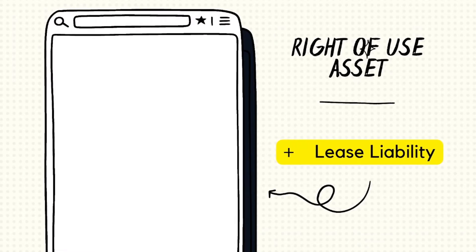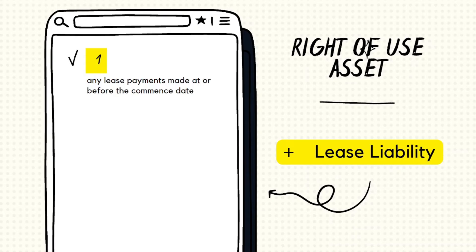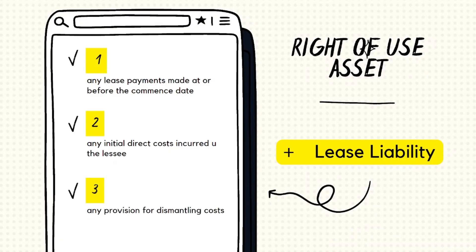By what amount should we debit the right-of-use asset? That's a little more technical, because we may not only be incurring the lease liability — we may have made other expenditures as well. In addition to the lease liability, the value of the right-of-use asset also includes: any lease payments made at or before the commencement date (amounts paid for the asset not captured in the lease liability); any initial direct costs incurred by the lessee; and any provision for dismantling costs. When we recognize a dismantling provision, we debit the asset account rather than an expense, so that the dismantling cost is spread over the useful life of the asset and not expensed all at once.